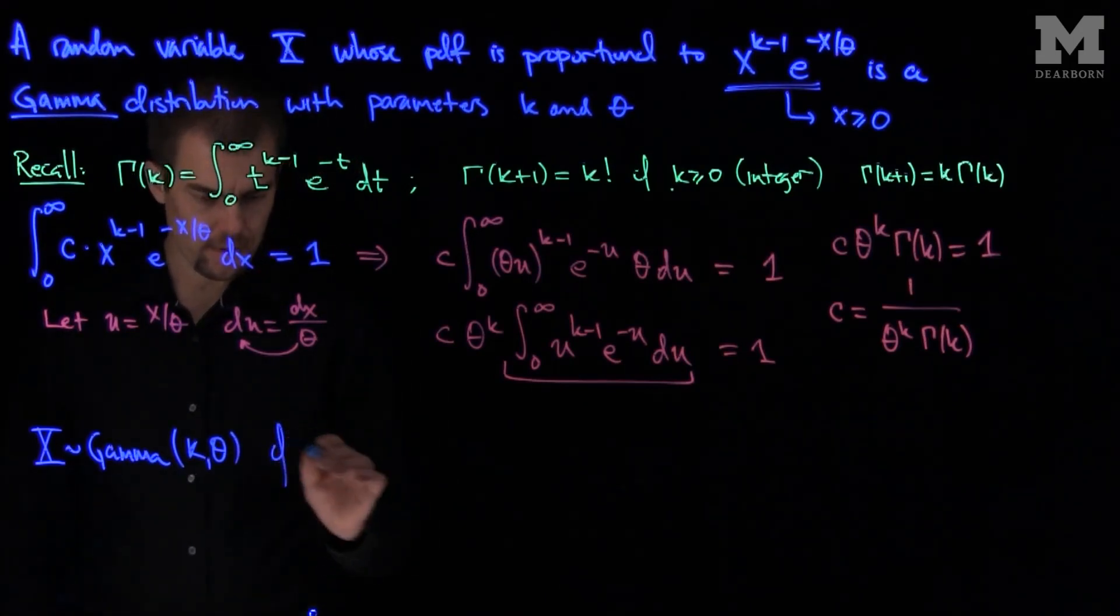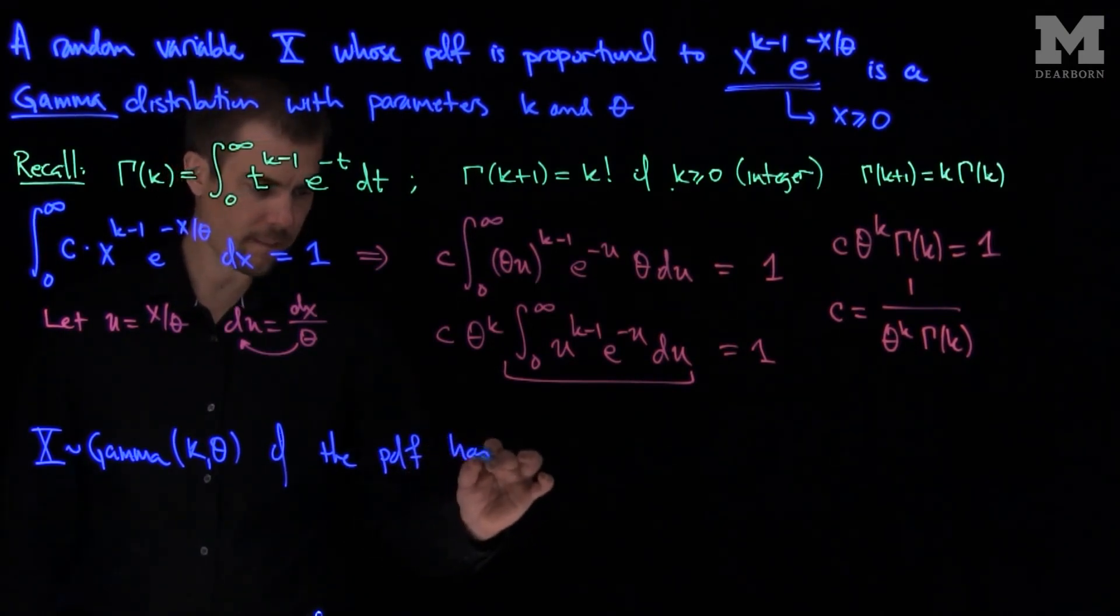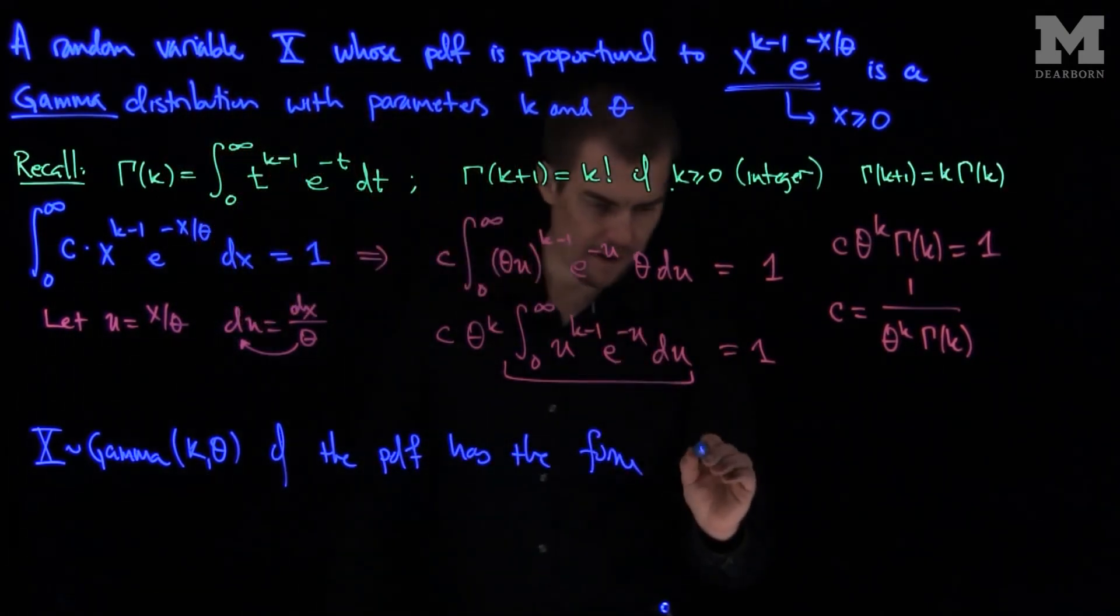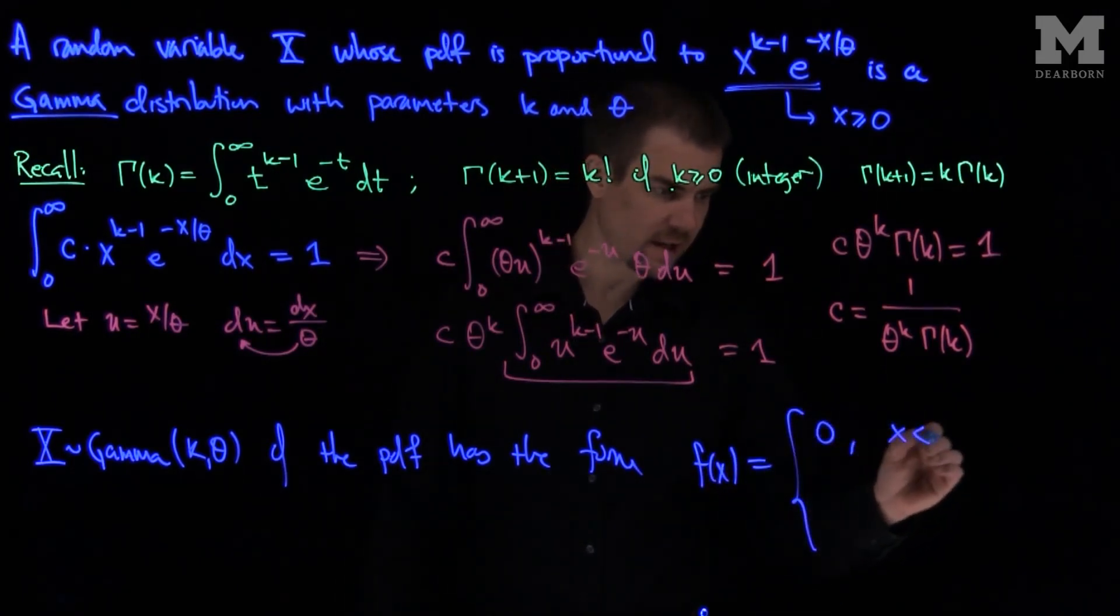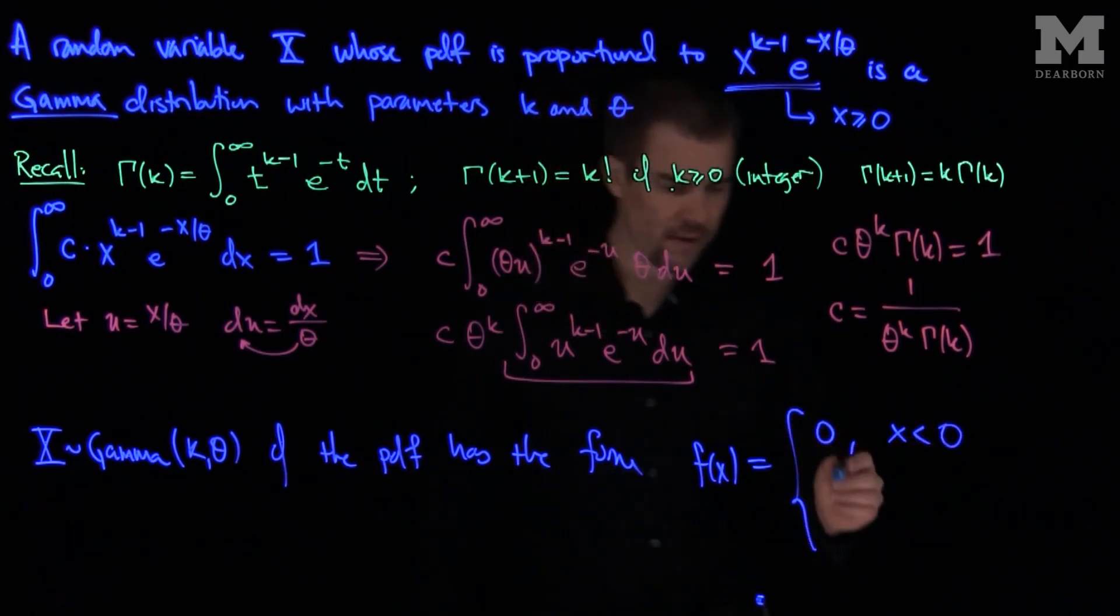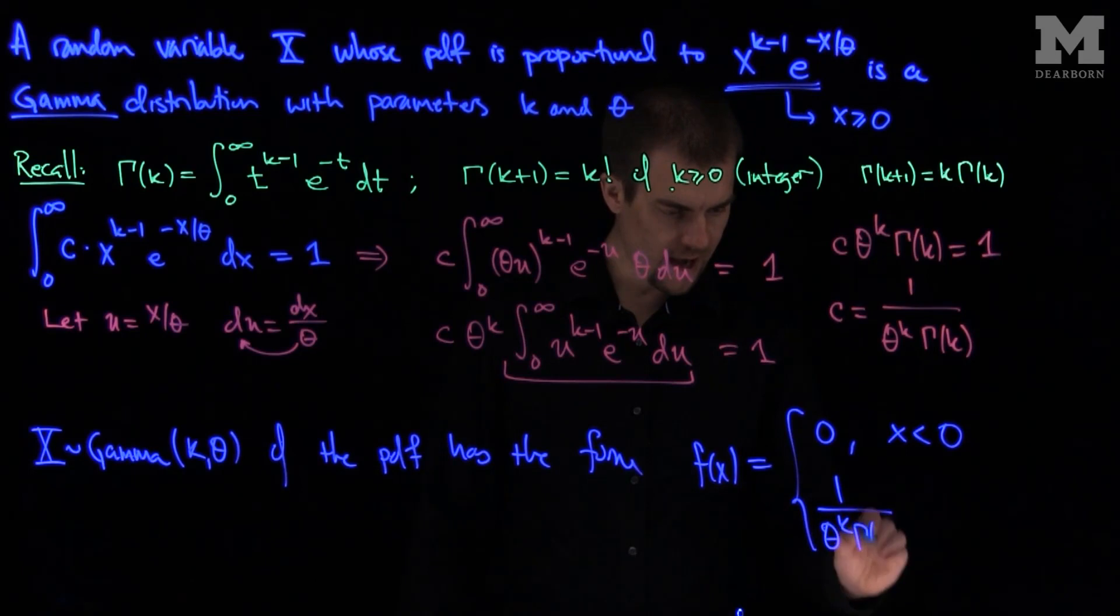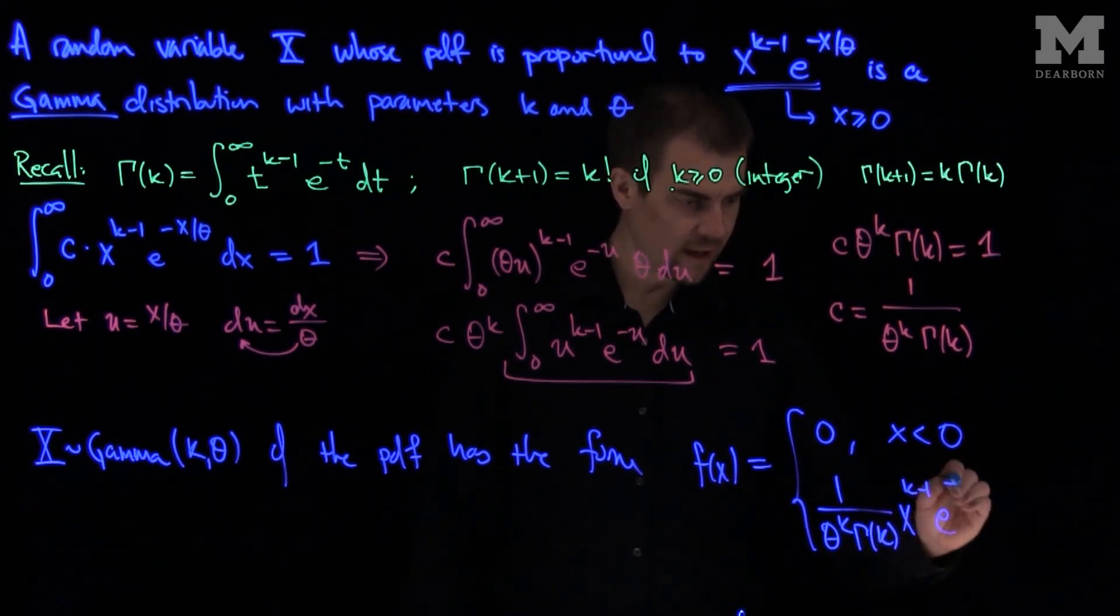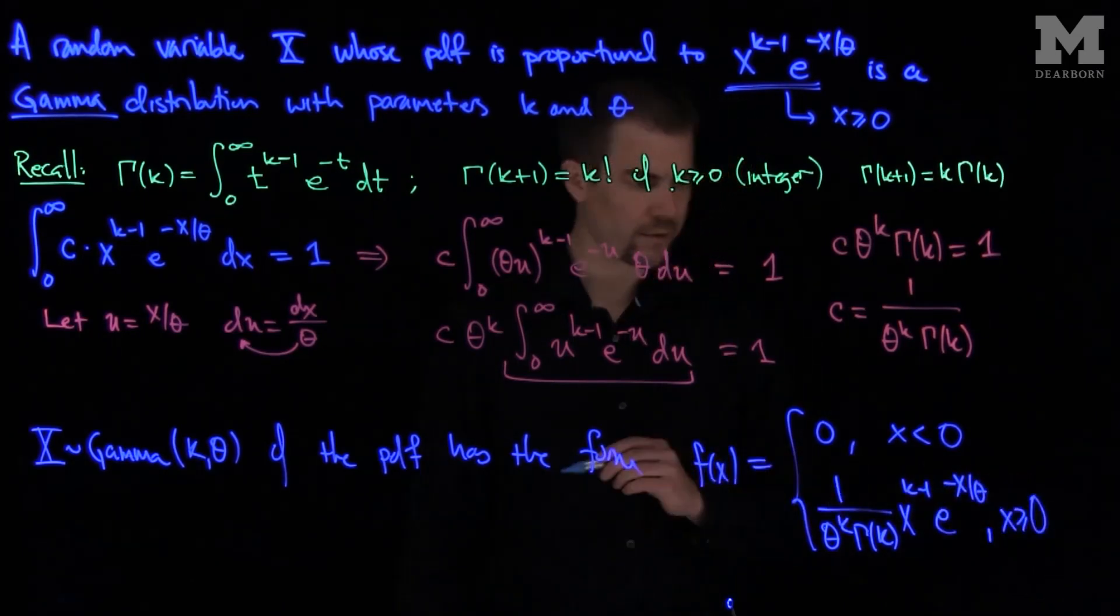So we say that X is gamma with parameters k and theta if the PDF has the form f of x is 0 if x is less than 0. And then the PDF is going to be 1 over theta to the k gamma of k x to the k minus 1, e to negative x over theta if x is greater than or equal to 0.